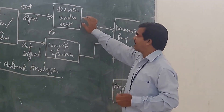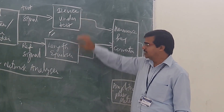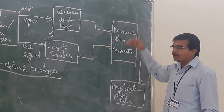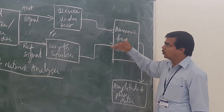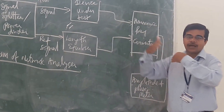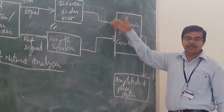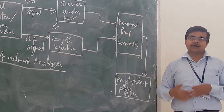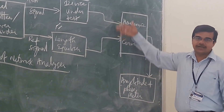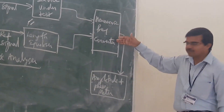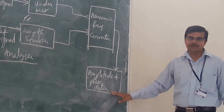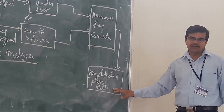Here you are having a device called a length equalizer, and it is going to the harmonic frequency converter. The harmonic frequency converter takes your test signal and reference signal and tries to find some relation — whether it is the second harmonic, third harmonic — so it will find some harmonic relation. From that, you will have the amplitude and phase output from the phase meter.